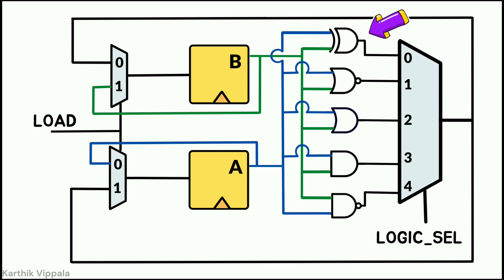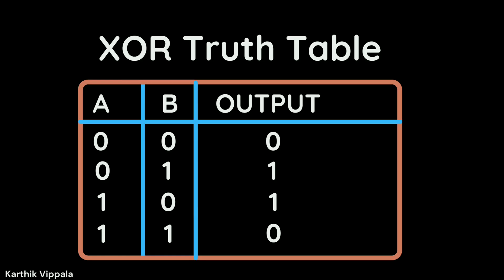Here, as you can see, the XOR has two inputs A and B and one output. Whenever A and B are 0, the output is 0. When A is 0 and B is 1, output is 1. When A is 1 and B is 0, the output is 1. When both are 1, the output is 0.